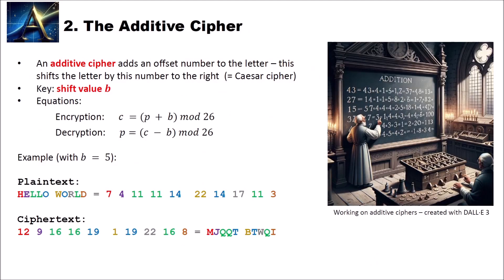First let's have a look at an additive cipher. An additive cipher adds an offset number to the letter. This shifts the letter by this number to the right. You probably know this as a Caesar cipher. The key is a shift value b. What does it mean when we shift a letter? Let's assume our plaintext letter is A and we have a shift by 3. Then A becomes B, C, D. So we encrypt A with D.